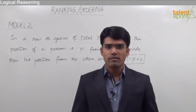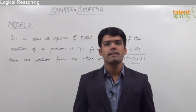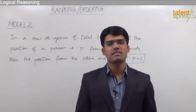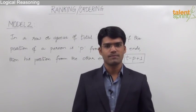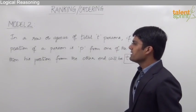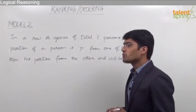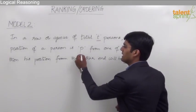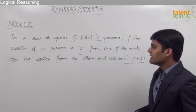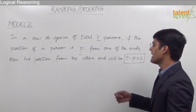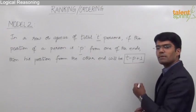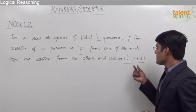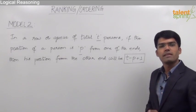Let us now understand the second model where we can find out the position of a person from the other end when his position is given from one of the ends. In a row or queue of total t persons, if the position of a person is p from one of the ends, then his position from the other end will be t minus p plus 1, where t is the total number of persons and p is the position from one of the ends.